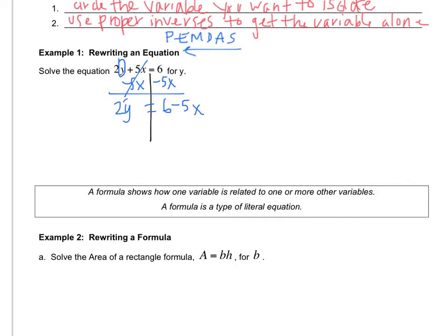That y is still not alone. So I have to inverse divide by 2. And everybody divides by 2. Although it looks like it's unbalanced because there's two 2s over here and one 2 over here, it's unbalanced if you don't do it to everybody.